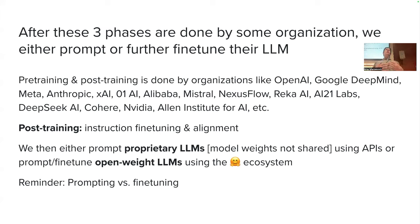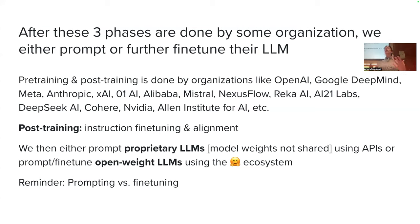What we do is take these language models. If they are proprietary — meaning their weights are not shared with the world — we rely on APIs, for example ChatGPT or Anthropic's models. We can also prompt or fine-tune open-weight models like LLaMA, Mistral, Qwen, and so on. If dealing with open-weight models, we typically use the HuggingFace ecosystem. The main difference between prompting and fine-tuning is that with fine-tuning we change the model weights, whereas with prompting we do not — we construct a nice prompt to elicit the model's capabilities.